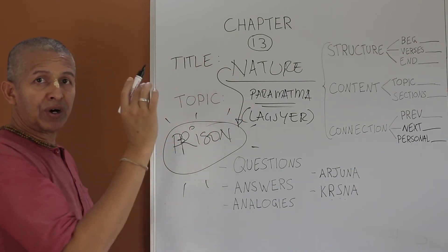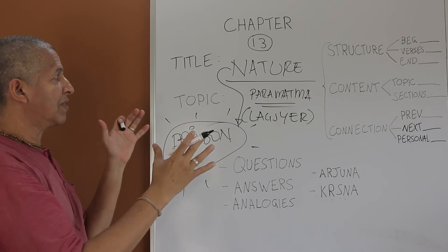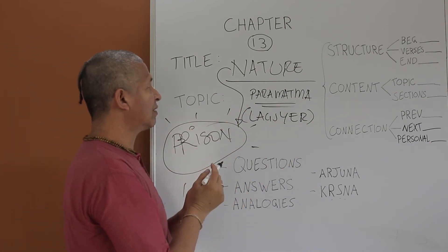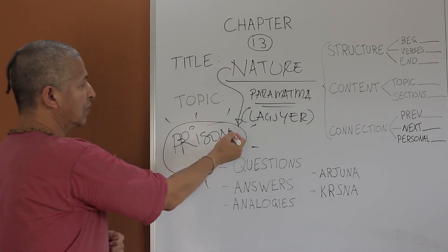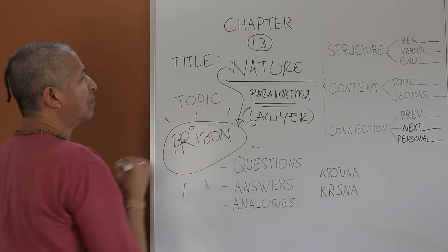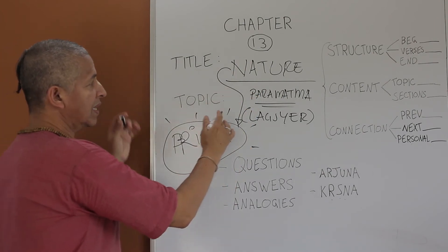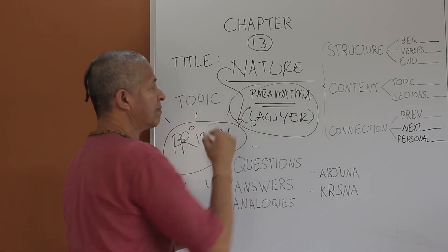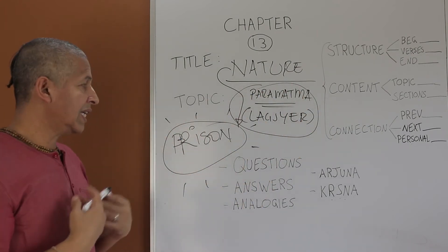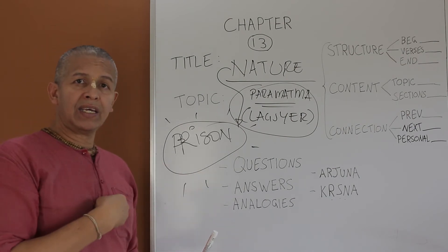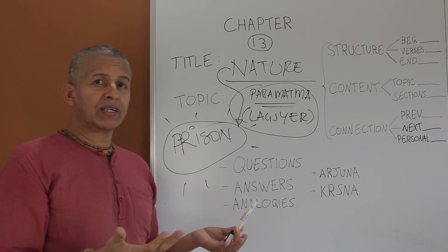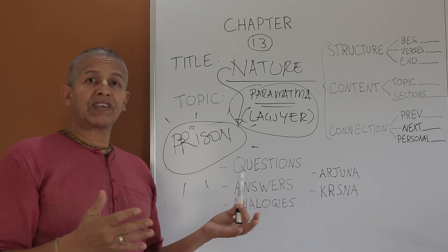So that's the beginning. Chapter 13 called Nature Enjoyed in Consciousness. Nature refers to material nature or the prison house. The topic is the description of Paramatma, Krishna in our heart. He takes the place of an advocate, of a lawyer, of a protector, and he stays with us, doesn't matter what condition of life, 24-7, for free.